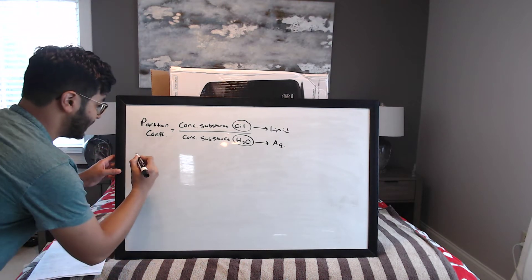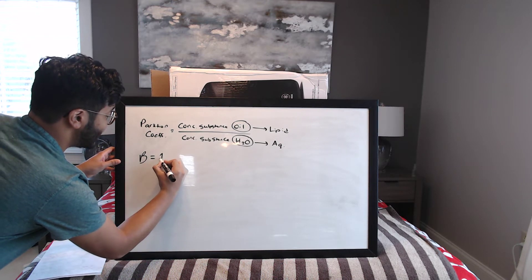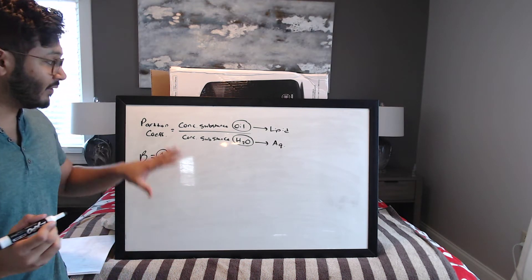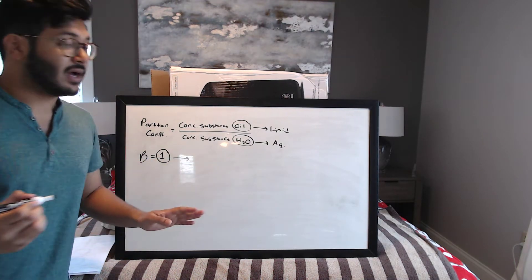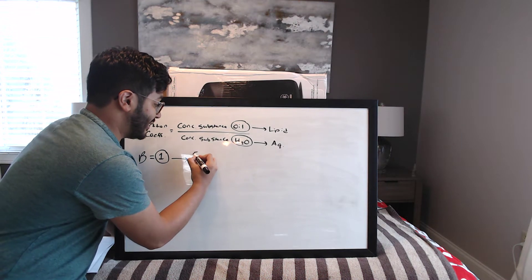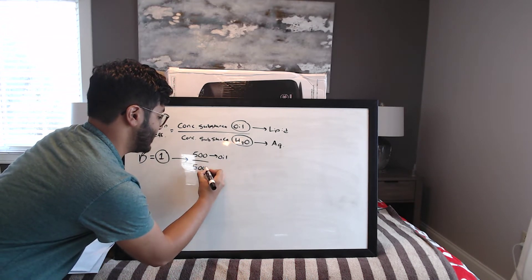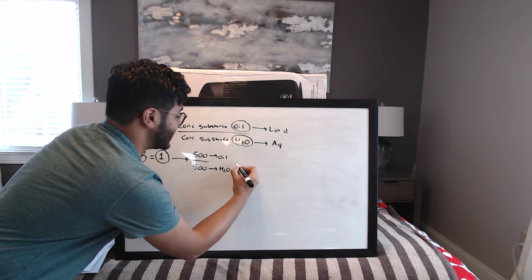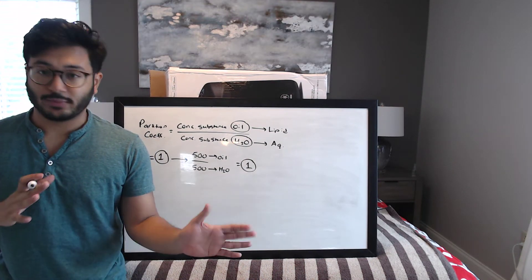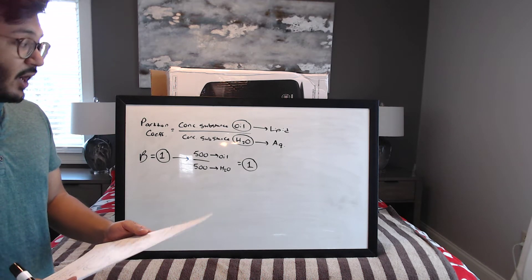The partition coefficient is called B. When B equals one, the substance has no difference in affinity for the oil or water phase — for example, if the concentration is 500 in the oil phase, it will also be 500 in the water phase. This is your baseline.